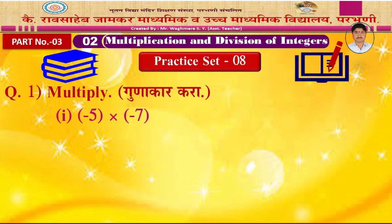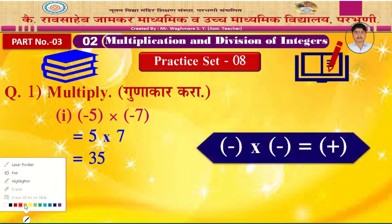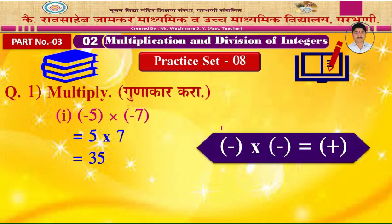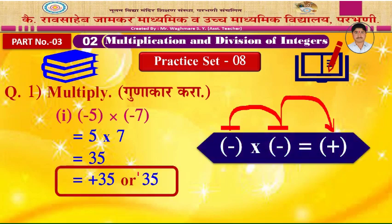Example 1: Minus 5 into minus 7. You may multiply without thinking about the sign — 5 into 7 is 35. But remember the rule: the first number is negative and the second is also negative. When both numbers are negative, the product is positive. So the answer is plus 35, or simply 35.